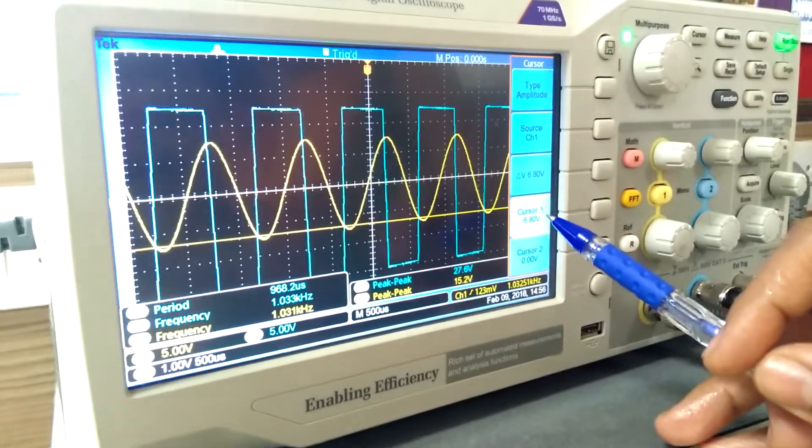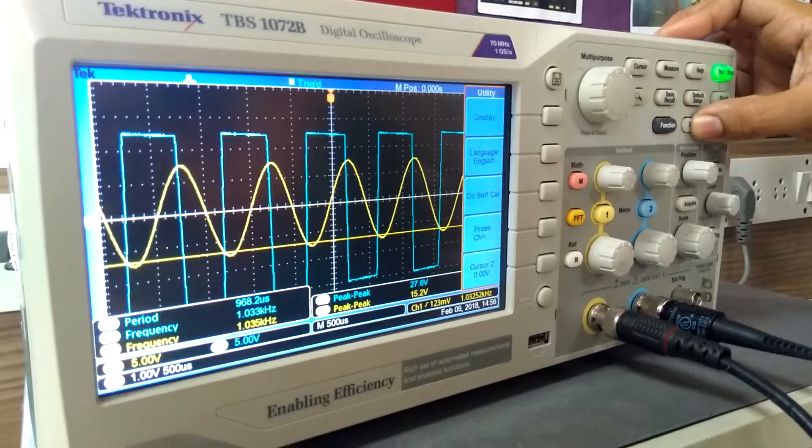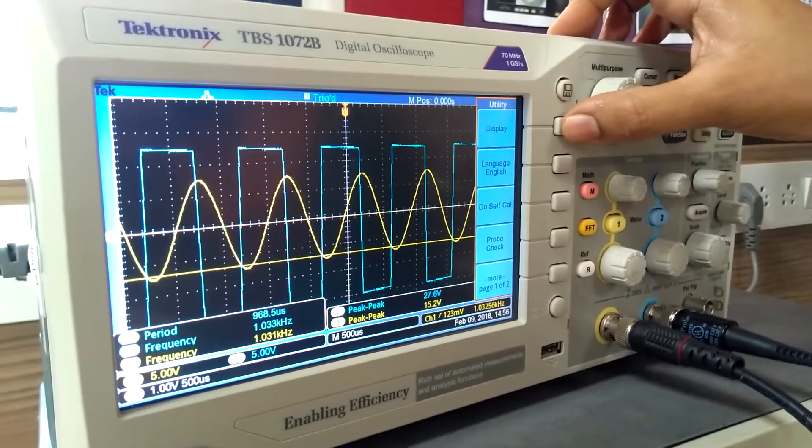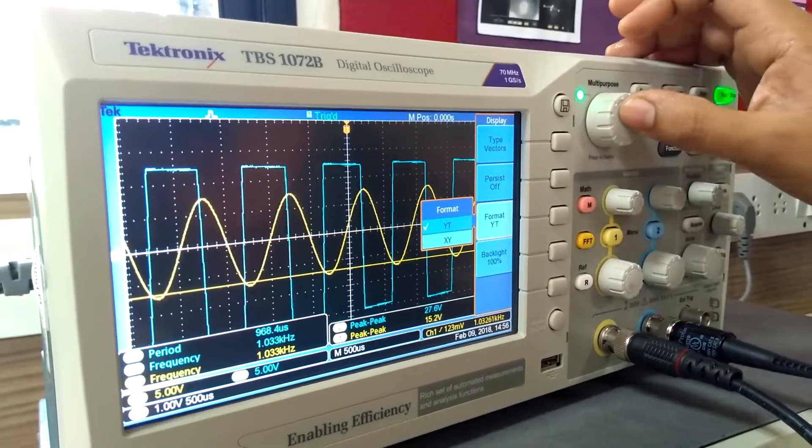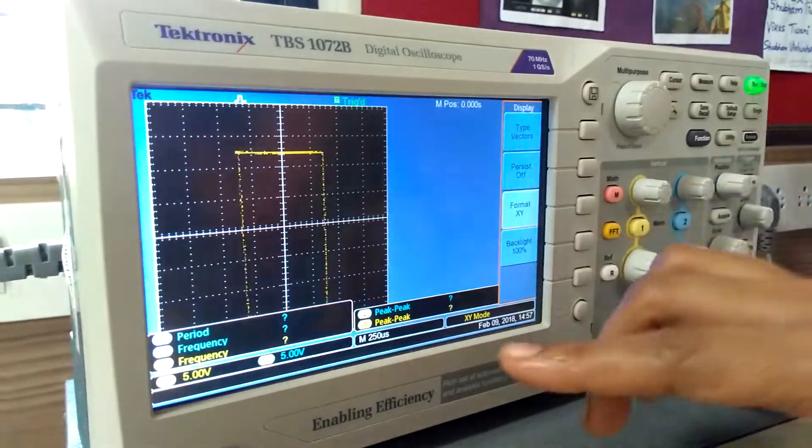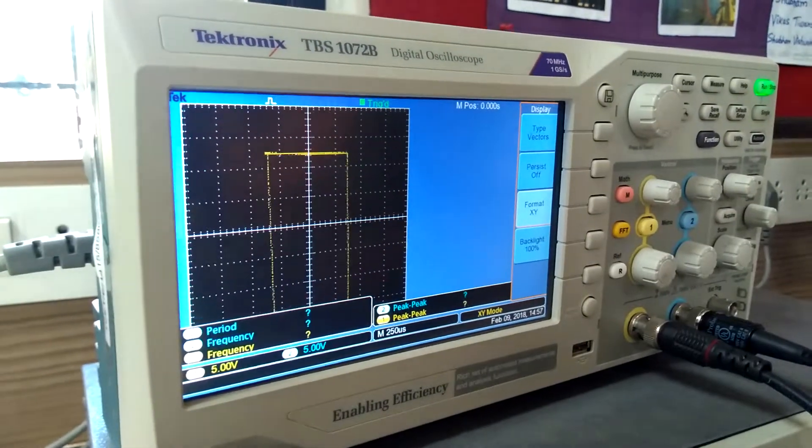Now for this waveform, we have to check hysteresis. For that, press button utility. Then select display type, YT to XY mode. Then we can see here hysteresis pattern. Thank you.